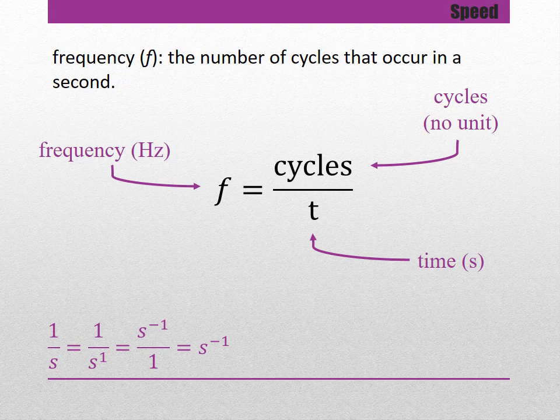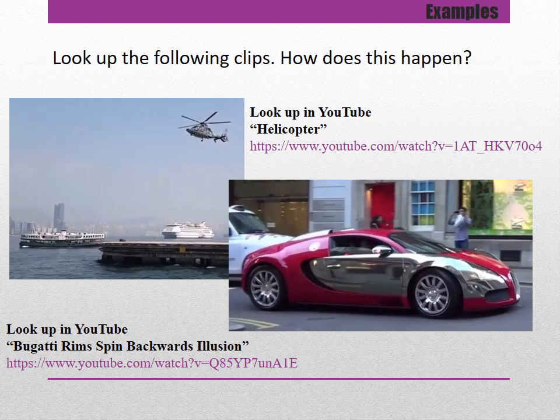Typically instead of writing s to the minus 1, we write frequency with the units of Hertz, symbolized by a capital H and a small z. Look up the following clips — how does this happen?